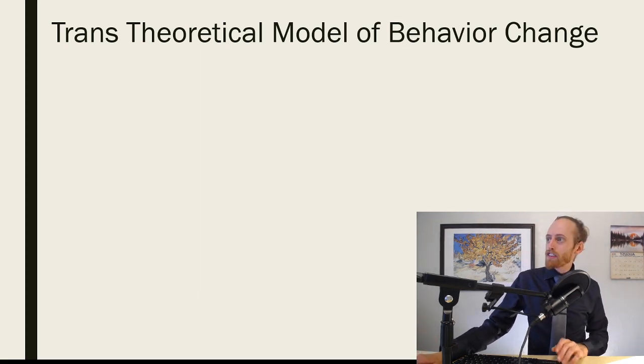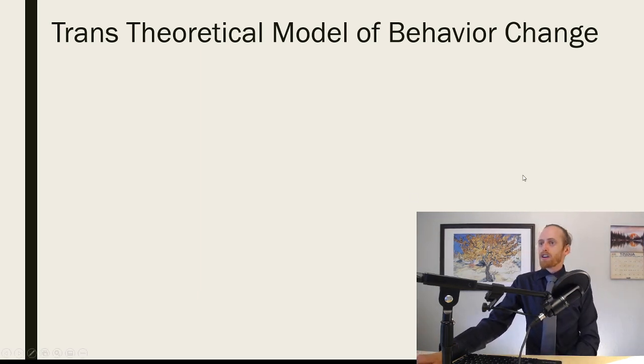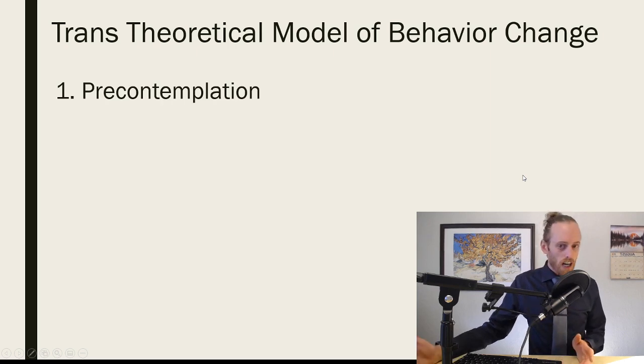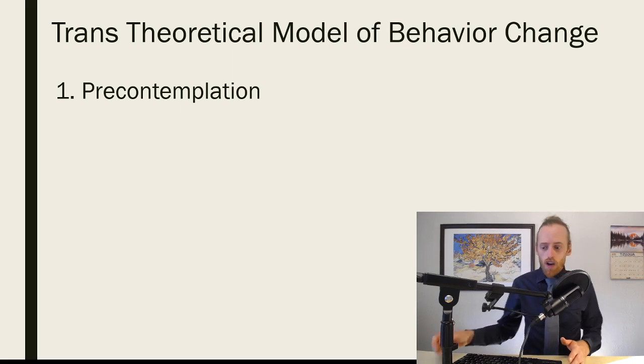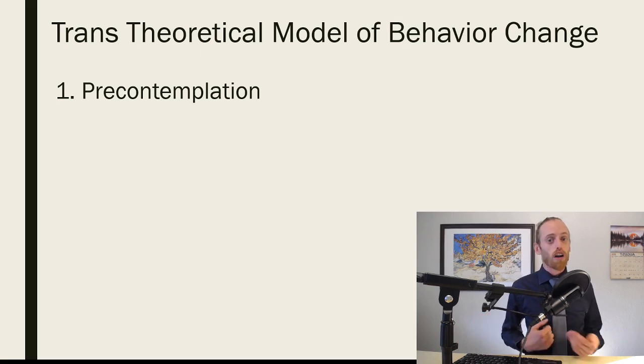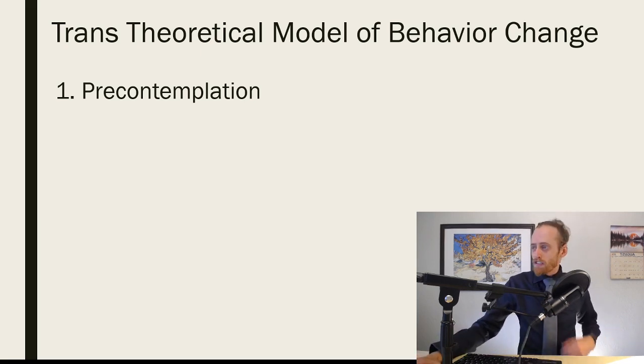The transtheoretical model of behavior change: the first step is precontemplation. This is the stage where oftentimes you're unaware of what you need to accomplish, or else you might be aware of something but you are unwilling to make the change for at least six months.